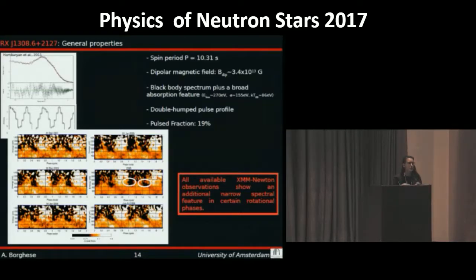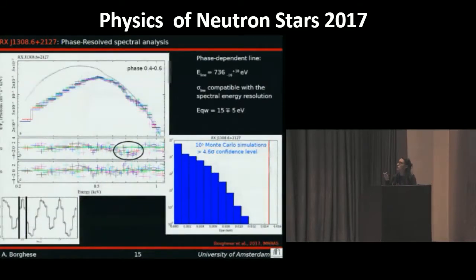Under different assumptions for the continuum model, we changed the model for the broad absorption feature or used different cross sections and abundance values for the photoelectric absorption model. Just one of these lines appears to be significant, so we focused on the interval of 0.4 to 0.6 in phase. So we proceeded again with a phase-resolved analysis, and here in the plot we have the simultaneous fit for this interval.